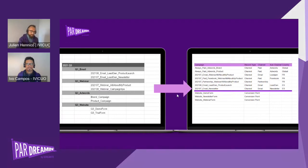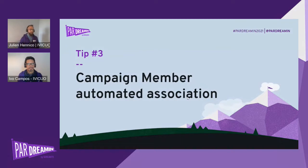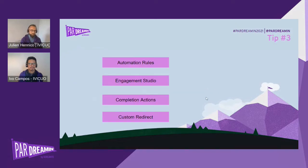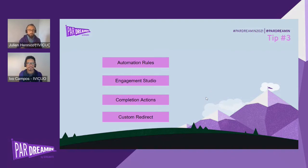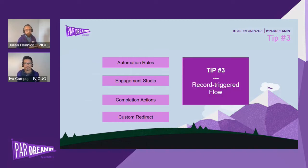Now that we're clear on the data structure, let's see how to push your leads or contacts into those campaigns. We all know automation rules, engagement studio, and completion actions to push users to campaigns. But what we're going to share today is a technique using record-triggered flows in Salesforce. This will enable you to automatically push leads and contacts into campaigns without having to run a new automation rule or completion action each time — saving a lot of time for your marketing operations team.